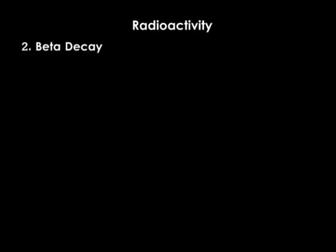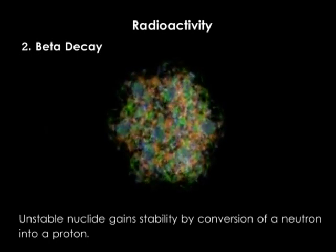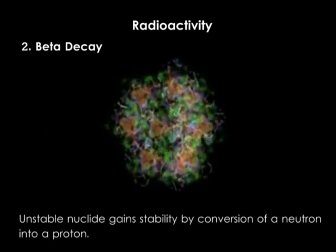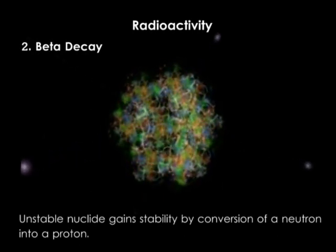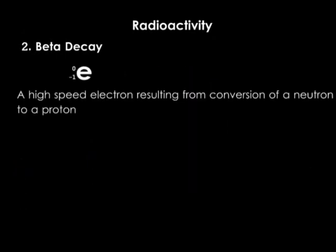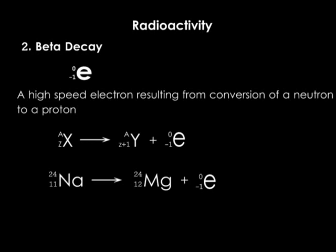Beta decay. An unstable nuclide may also gain stability by a conversion of a neutron into a proton. Consequently, an electron is emitted. This is beta decay. A beta particle is basically a high-speed electron resulting from the conversion of a neutron to a proton, and is represented as shown here. If a nuclide undergoes beta decay, the mass number remains unchanged but the atomic number increases by 1. For example, radioactive sodium undergoes beta decay to become magnesium.